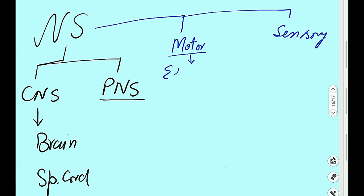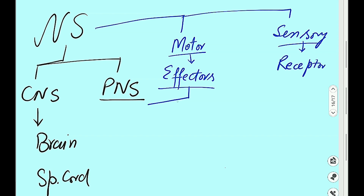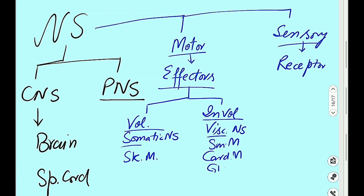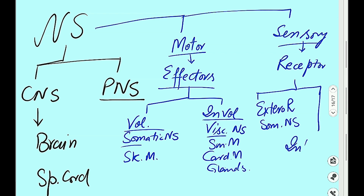When the function is motor, it is the job of the effectors; when it is sensory, it is the job of the receptors. Effectors have two categories: voluntary effectors, which belong to the somatic nervous system, and involuntary effectors, which belong to the autonomic nervous system. Voluntary effectors are the skeletal muscles, while involuntary effectors are the smooth muscle, cardiac muscle, and glands. Receptors also have two categories: exteroreceptors belonging to the somatic nervous system, and interoreceptors belonging to the autonomic nervous system.